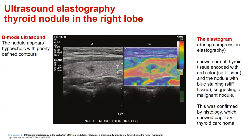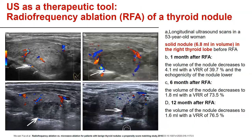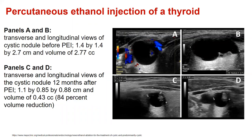We can use ultrasound elastography as well on thyroid nodules, as shown on the right-hand side panel, showing normal thyroid tissue encoded with red color and the nodule with blue, suggesting a malignant nodule during compression elastography. We can also use ultrasound as a therapeutic tool, like for radio frequency ablation of a thyroid nodule or a percutaneous ethanol injection into a benign cyst of the thyroid.